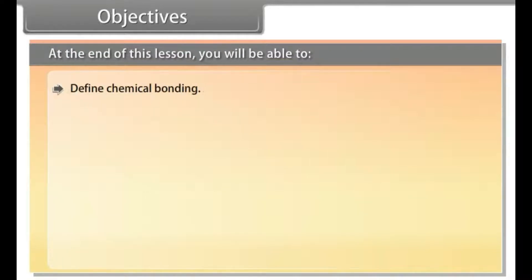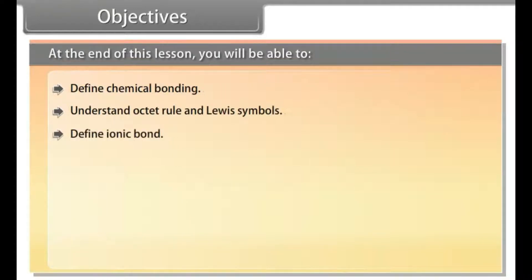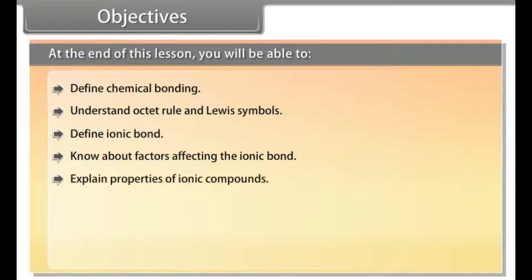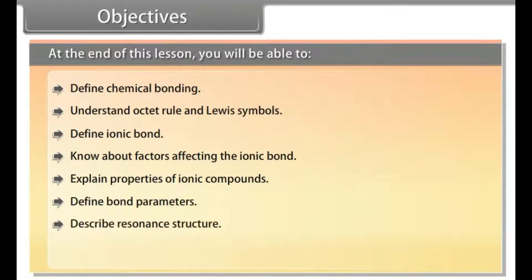Objectives. At the end of this lesson, you will be able to: define chemical bonding, understand the octet rule and Lewis symbols, define ionic bond, know about the factors affecting the ionic bond, explain properties of ionic compounds, define bond parameters, describe resonance structure, and know about polarity of bonds.